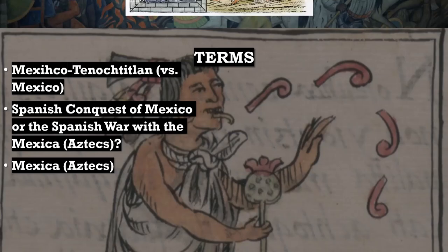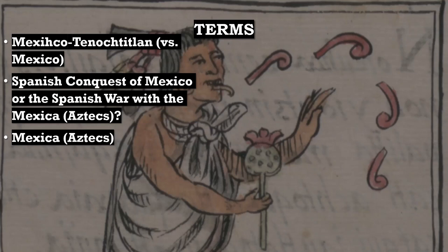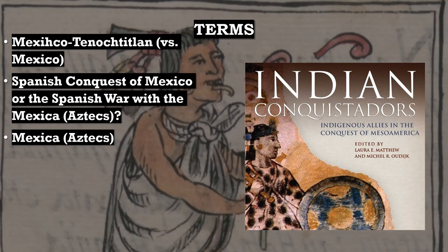Before moving forward, I want to clarify that I use the term Mexico Tenochtitlan to refer to the Mexica or Aztec capital city Tenochtitlan, which was also referred to as Mexico. When I refer to the conquest of Mexico with the Nahuatl H inserted, I'm referring to the Spanish conquest of the Mexica. This event should be more properly referred to as the Spanish war with the Mexica, or the Spanish conquest of the Mexica.